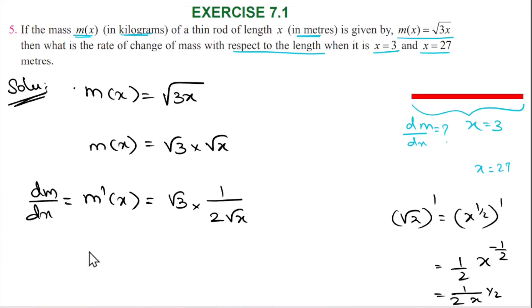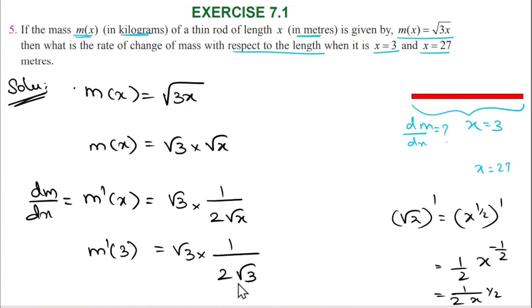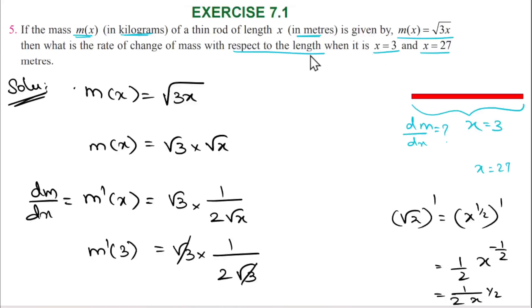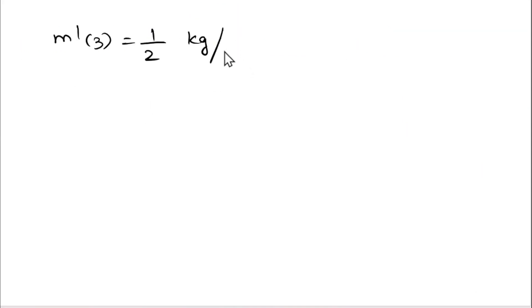M dash of 3 is the rate of change of mass when x is equal to 3. M dash of 3 equals root 3 into 1 by 2 root 3, which simplifies to 1 by 2. So the rate of change of mass at x equals 3 is 1 by 2 kilograms per meter.